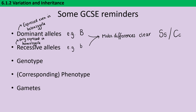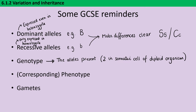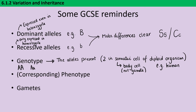We call the alleles present in a particular organism the genotype. For a diploid organism like a human, in the somatic body cells we would expect two alleles to be present. You could have a capital A and a capital A — homozygous dominant — a capital A and a lowercase a — a heterozygous genotype — or two lowercase a's — homozygous recessive.